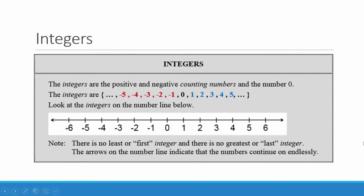Integers are positive and negative counting numbers and the number zero. You can see the list written here in set notation and you can see them on a number line. Envision them going on and on in the negative direction and on and on in the positive direction. There is no least or first integer and there is no greatest or last integer.